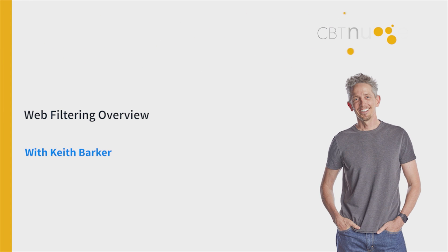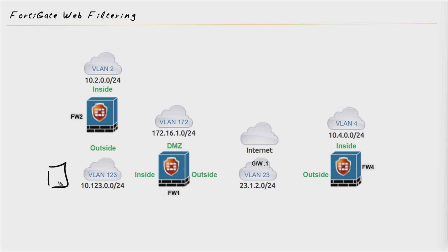In this video, you and I are going to take a look at several of our options regarding what we can filter on when doing web filtering on the FortiGate. So let's imagine we have a user right here that is about to go out to the internet. There are lots of great reasons why we might want to filter what that user can get to out on the internet.